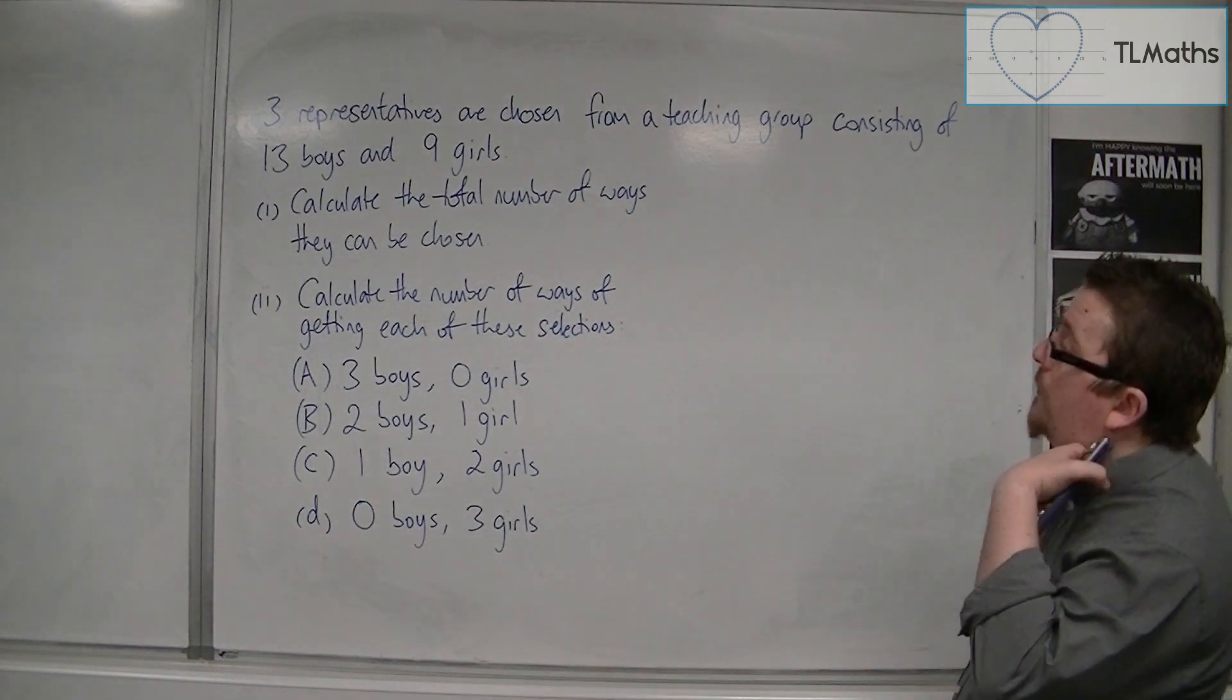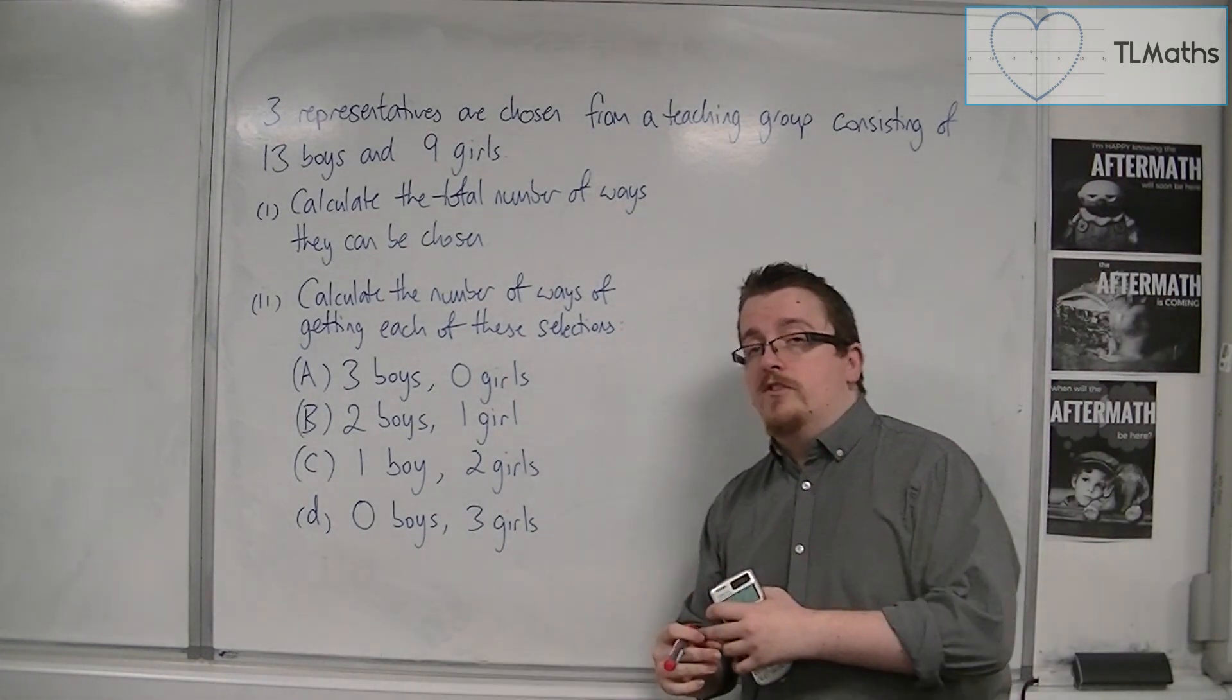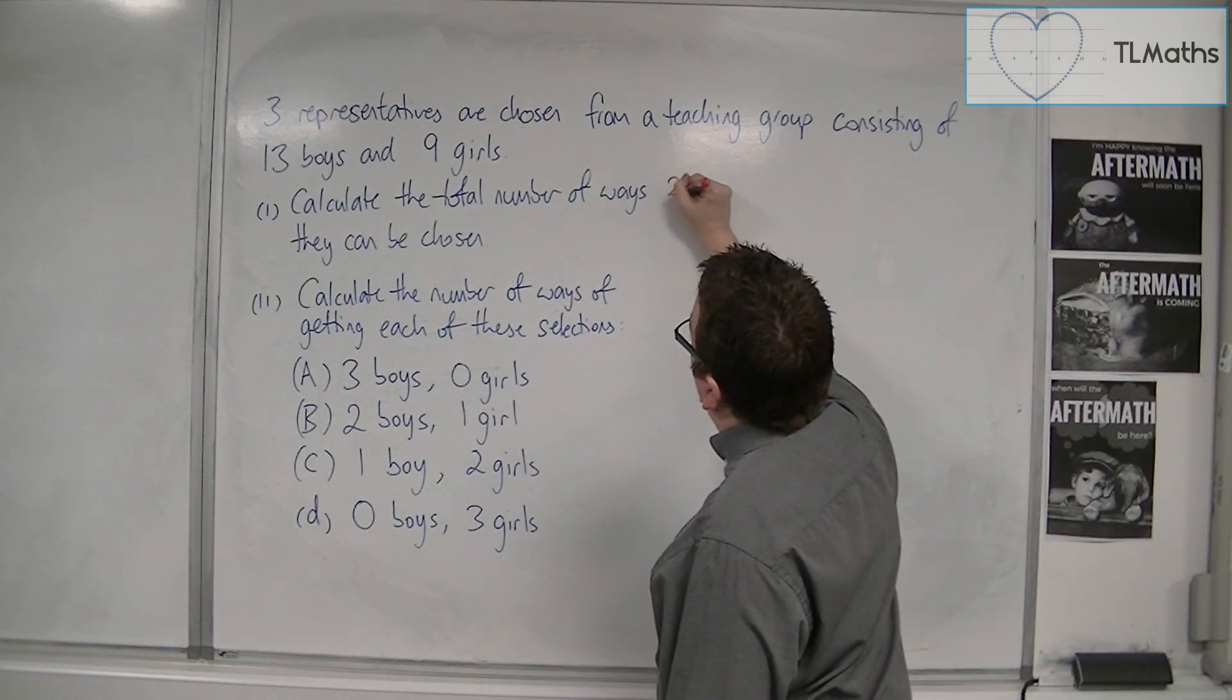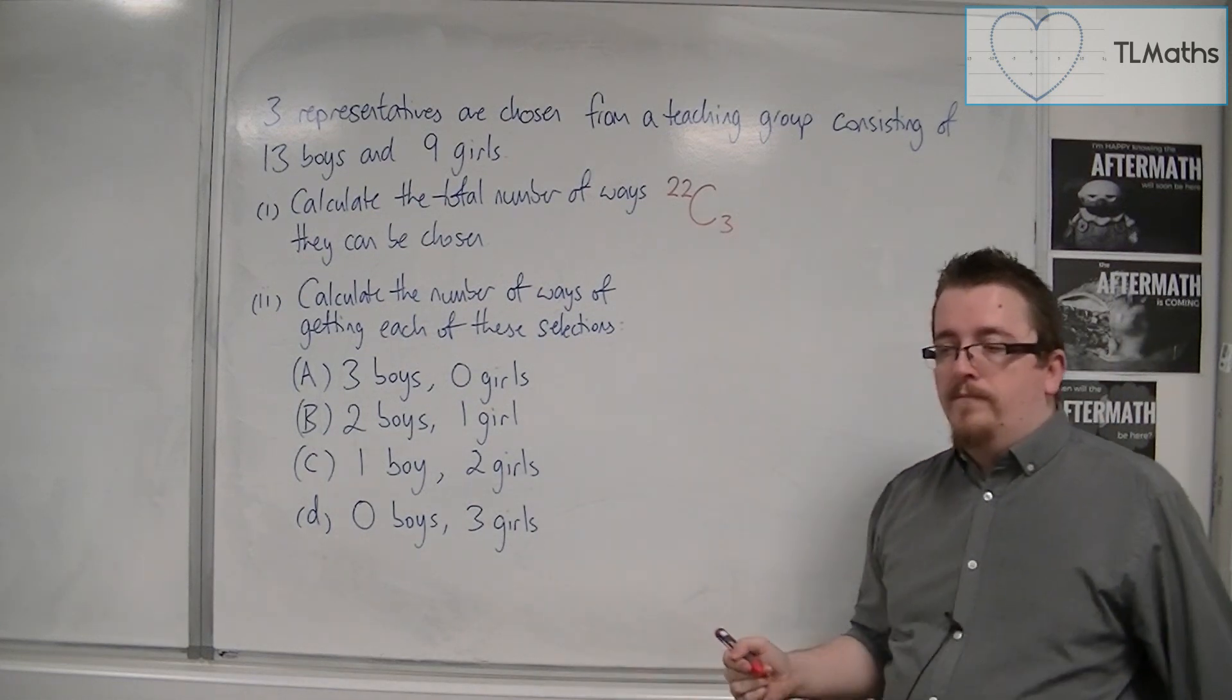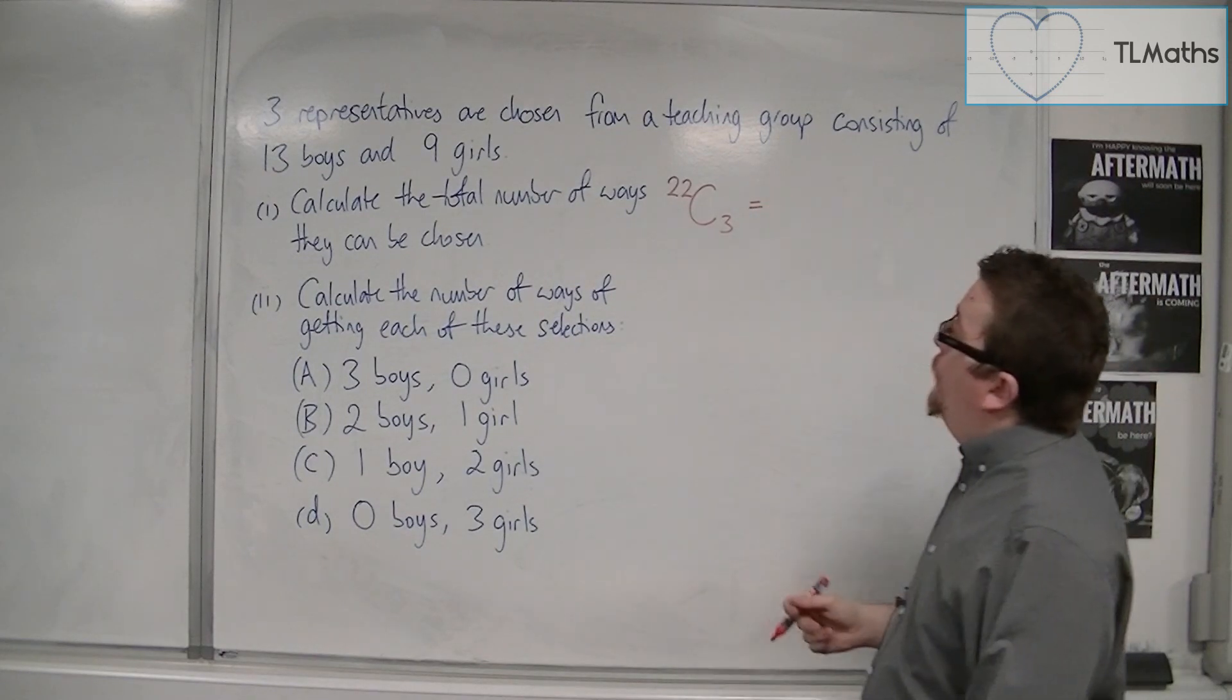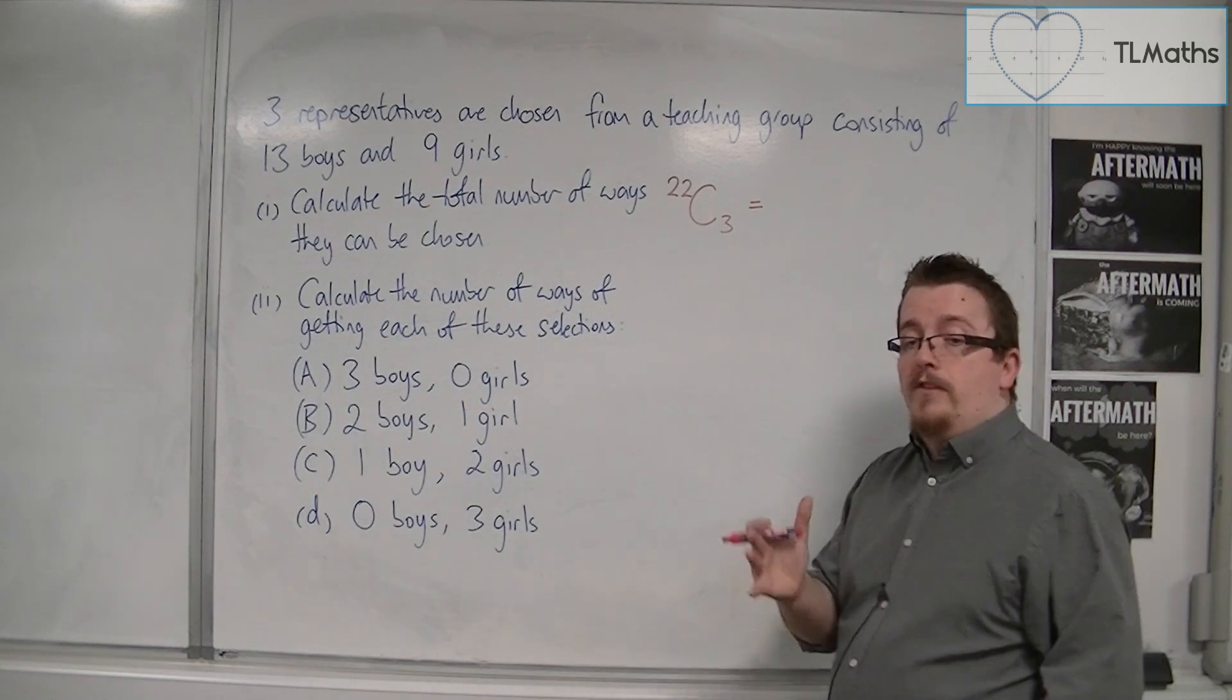The total number of ways they can be chosen - we've got 13 boys and 9 girls, so there are 22 students altogether. Out of the 22 students, we want to pick three representatives. So 22 choose 3. 22 NCR button 3, and we get 1540.